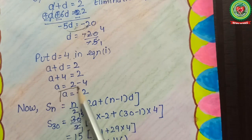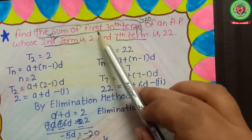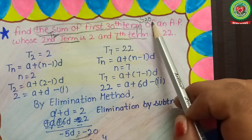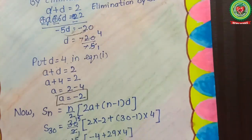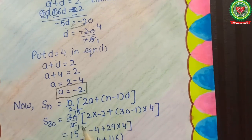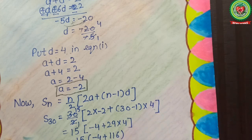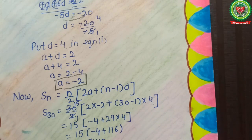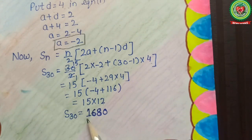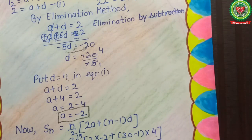By substituting d = 4 into equation 1 or equation 2, we get the value of a = −2. Now we need to find S30. Applying the formula: S30 = 30/2 × (2×(−2) + (30−1) × 4). By solving this, we get S30 = 1680. That means the sum of the first 30 terms is 1680. Hope this type is also understood by all of you.